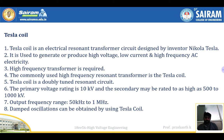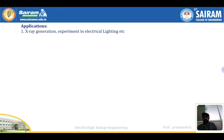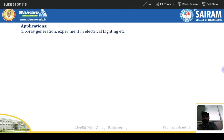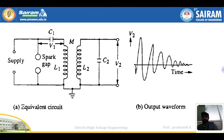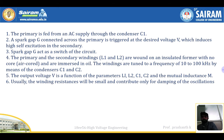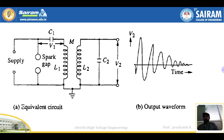The Tesla coil is a doubly-tuned resonant circuit — keep that in mind. The primary voltage rating is 10 kilovolts and the secondary may be rated as high as 500 to 1000 kilovolts. The output frequency ranges from 50 kHz to 1 MHz. Damped isolation can be obtained using a Tesla coil. Its applications include X-ray generation and lightning experiments. In the equivalent circuit, a spark gap is present; V1 is the voltage across capacitor C1, with mutual coupling M, and C2 is the output capacitance with output voltage V2.